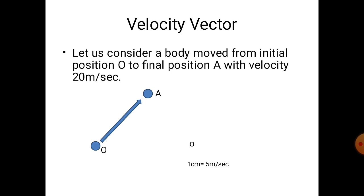Hence, I will draw a line small o to small a having length 4 cm in the direction of motion of the body. The initial end small o of the line is the tail end and the final end a is the head end. An arrowhead on the line indicates the direction or sense of the quantity, which is always from tail to head. This velocity vector is read as V AO, that is, velocity of point A relative to O.